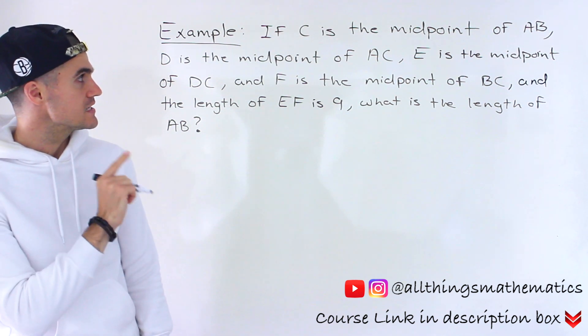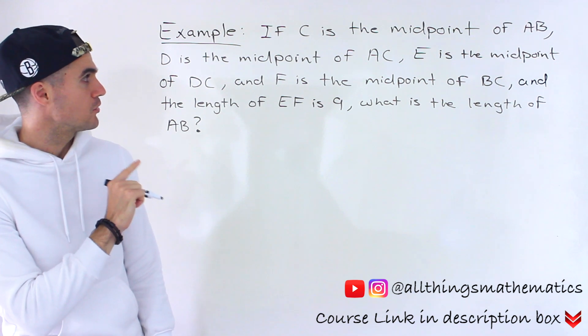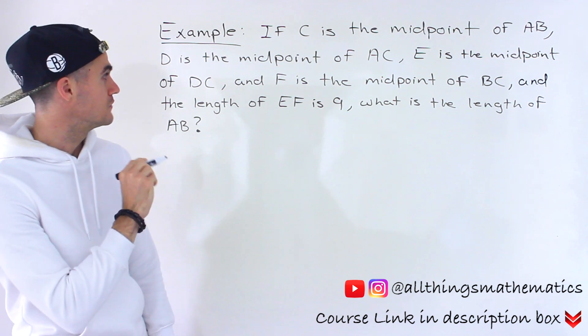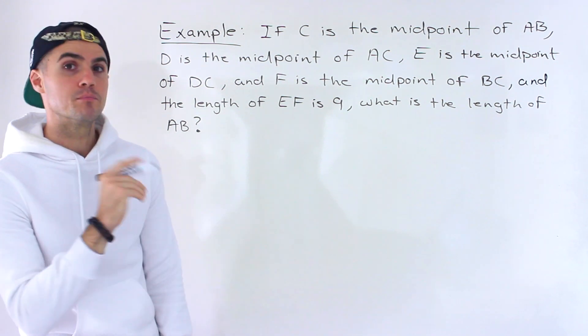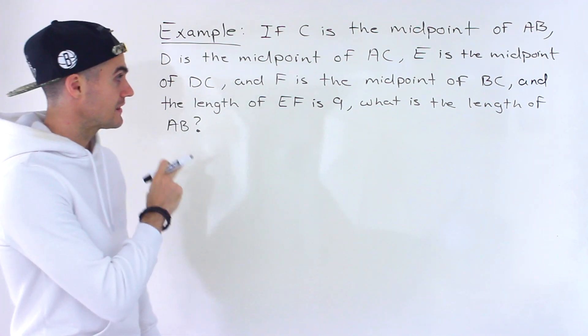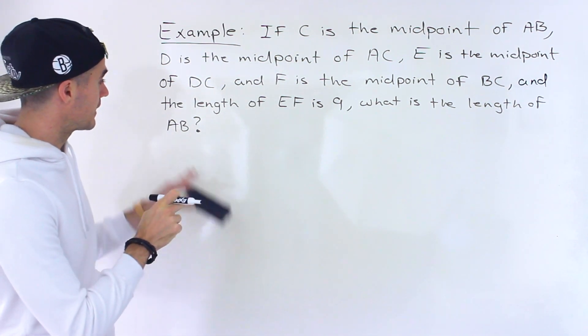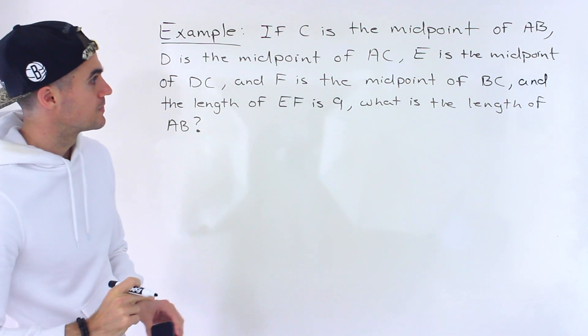So if C is the midpoint of AB, D is the midpoint of AC, E is the midpoint of DC, and F is the midpoint of BC, and the length of EF is 9, what is the length of AB?